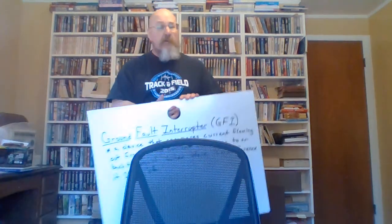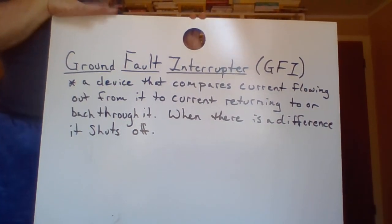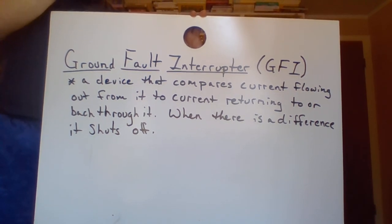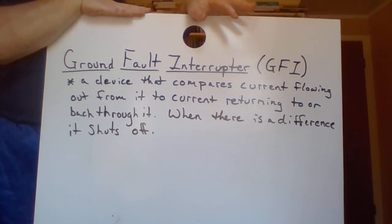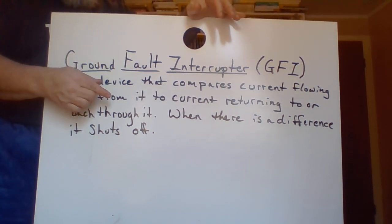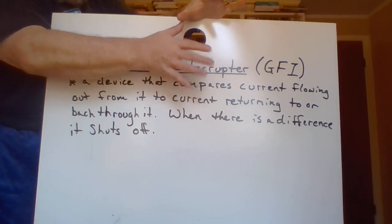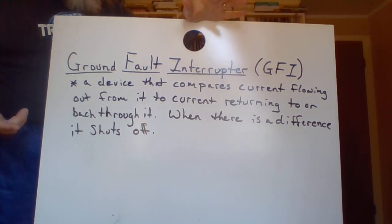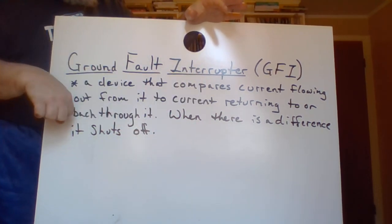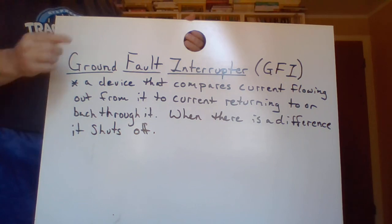Finally, the ground fault interrupter, or GFI. These are interesting devices normally located in bathrooms, or on outlets around sinks in kitchens. Hair dryers and hair straighteners often have them too. A ground fault interrupter compares the current flowing out of it to the current flowing back through it — out into wherever it's being used, and then back through since it's a circuit. If the current flowing out doesn't equal the current flowing back in, the device shuts off.